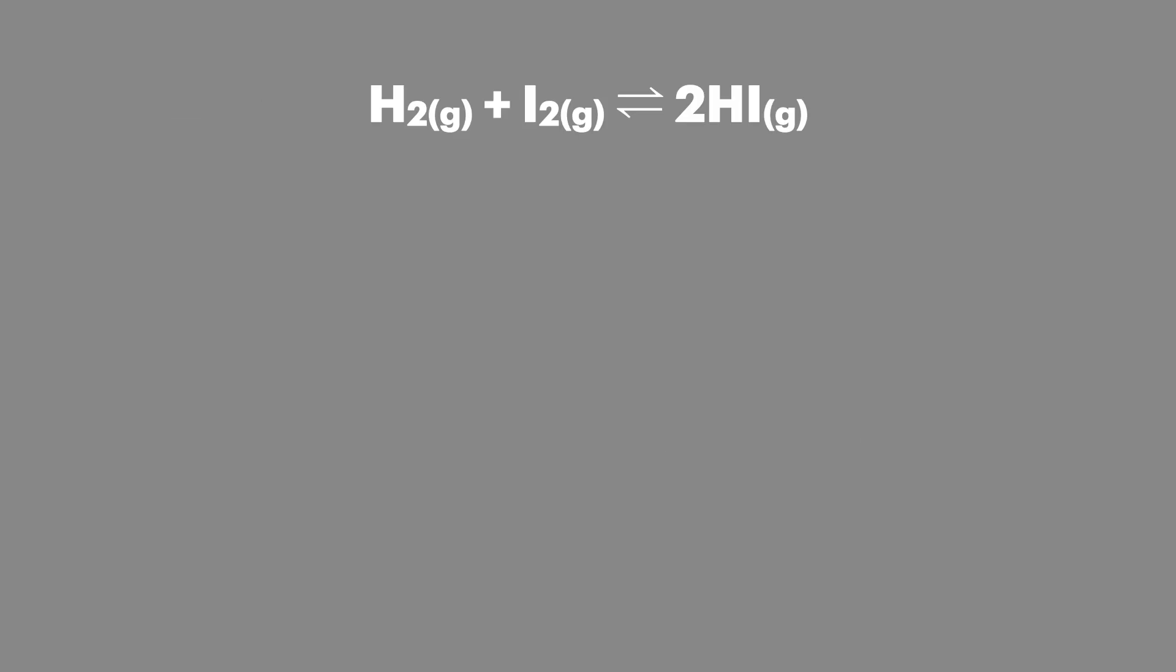We can look at this real example with the equilibrium of hydrogen and iodine forming hydrogen iodide. We'll put in some sample concentrations at equilibrium and we can see that equilibrium lies heavily to the right.